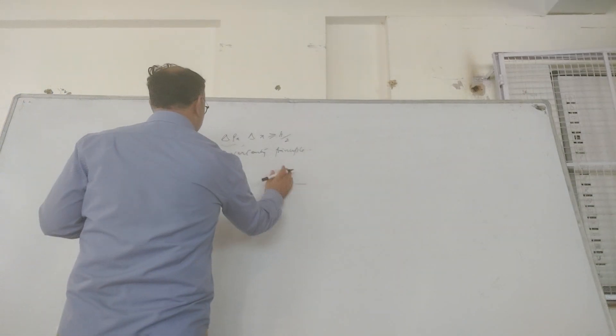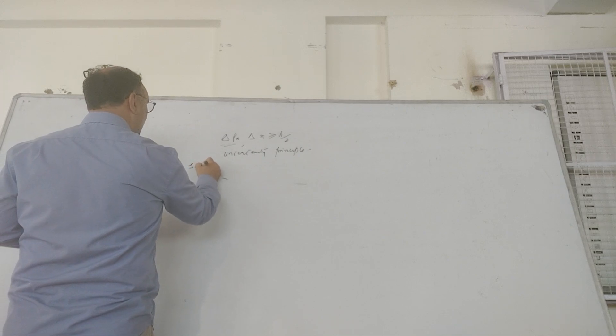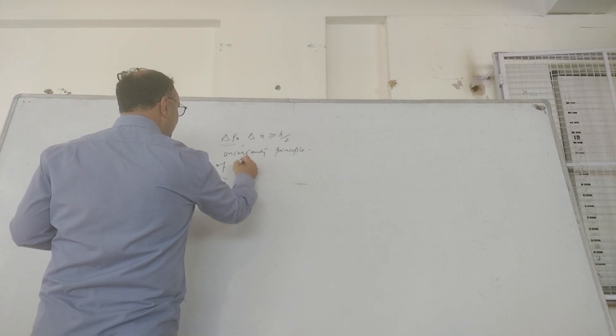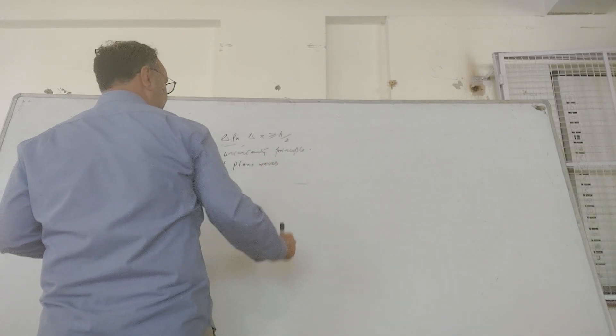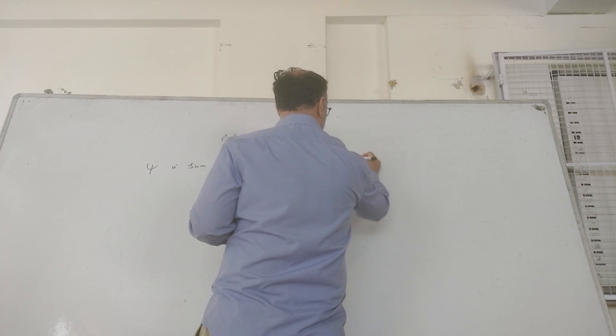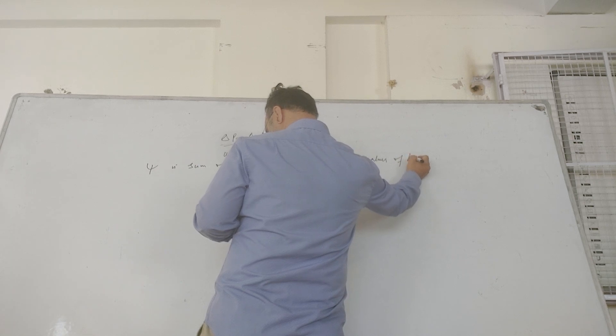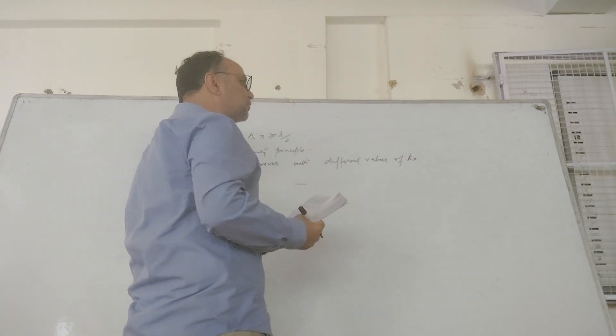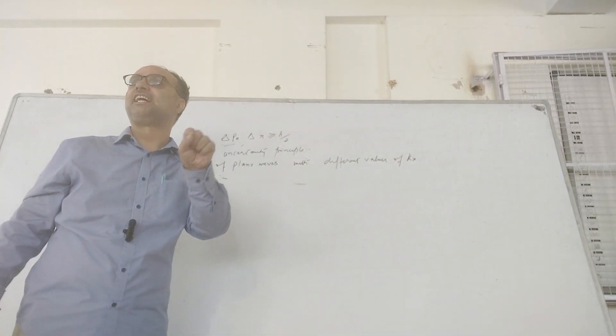So psi is basically sum of plane waves with different values of kx. So kx is the propagation constant.